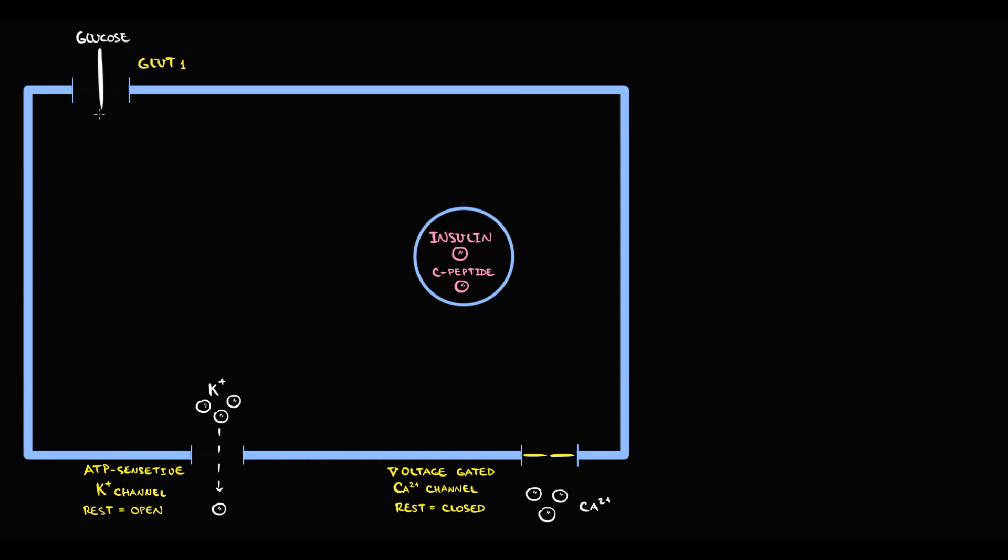When glucose enters into the beta cell, glucose undergoes phosphorylation by glucokinase to glucose-6-phosphate. Glucose-6-phosphate undergoes glycolysis with subsequent degradation in Krebs cycle and electron transport chain that results in production of ATP molecules. ATP molecules activate ATP-sensitive potassium channels. With activation, potassium channels close. If potassium channels close, potassium begins to accumulate inside the cell. With increasing positively charged potassium ions, membrane potential increases. For example, from minus 70, membrane potential increases to minus 50, and the state when membrane potential becomes more positive we call depolarization.